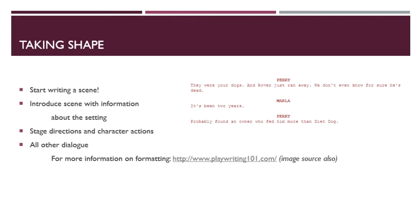You want to introduce your scene with some information about the setting and the characters and where they are. You can see the format for how to write your script at playwriting101.com, which has good tutorials on how the script should look, as well as stage directions and character actions — things the actors are going to do but not actually say. When you start writing scenes, think about what your objective is: what conflict needs to happen, and how does this advance the plot? Your characters speaking and their actions are what's going to move the story forward.